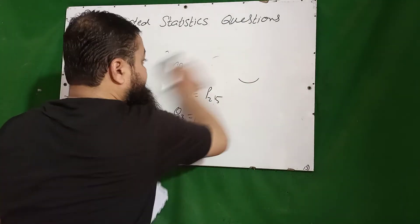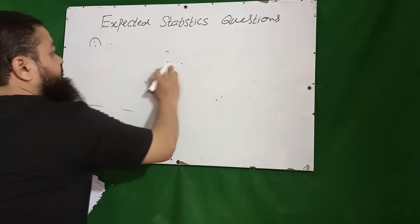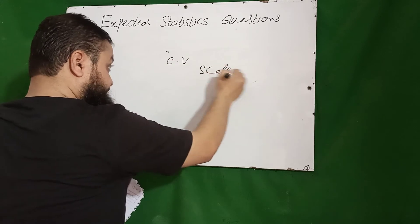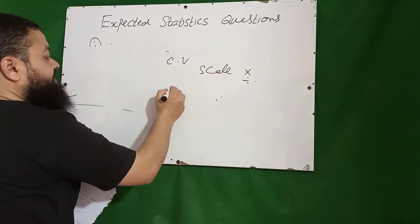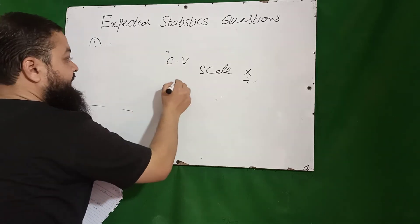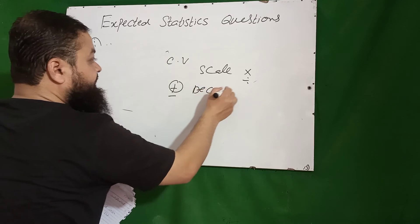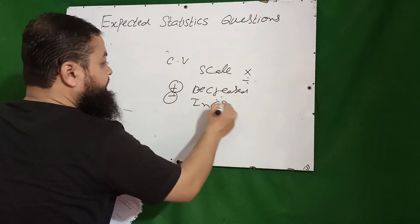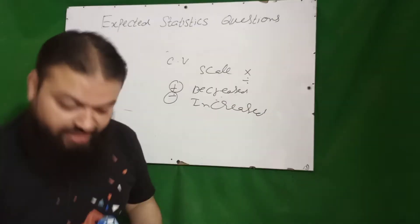The next very important point I have discussed many times: the coefficient of variation is independent of scale — it is not affected by multiplication or division. However, it is affected by addition and subtraction — it depends upon origin. If we add a constant value, the coefficient of variation will decrease; if we subtract a constant value, the coefficient of variation will increase.